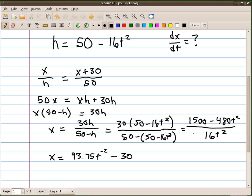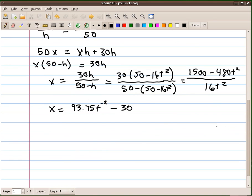Now, we'll take the derivative with respect to t. And this is just a power rule derivative. So, dx over dt is negative, oh, let's see, 187.5. Negative 2 times 93.75 is negative 187.5t to the negative 3 minus 0, because the derivative of 30 is 0.